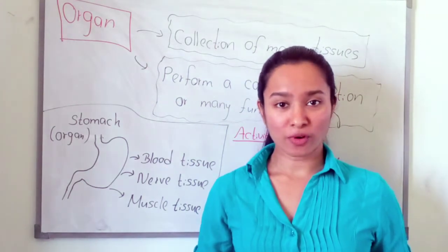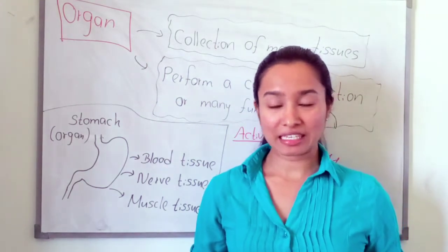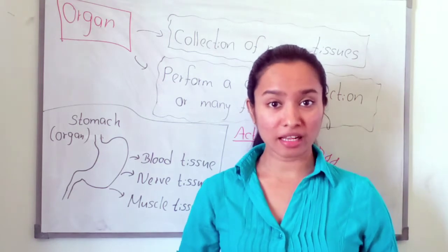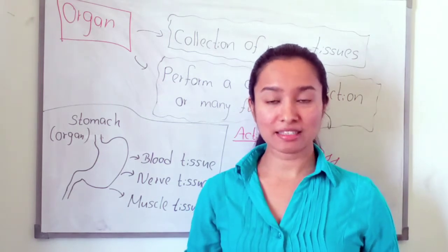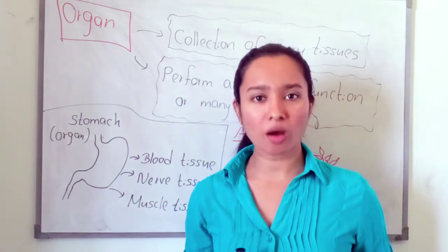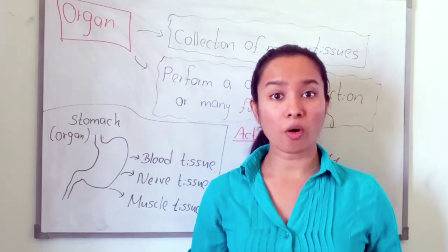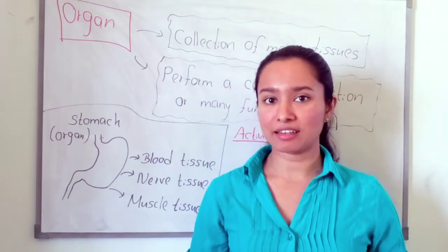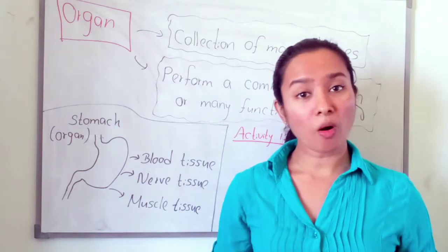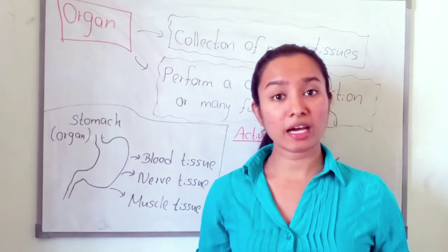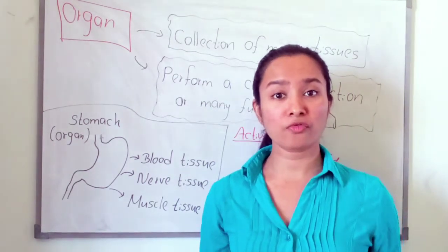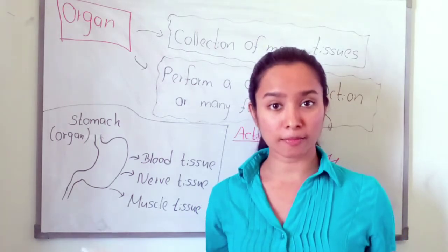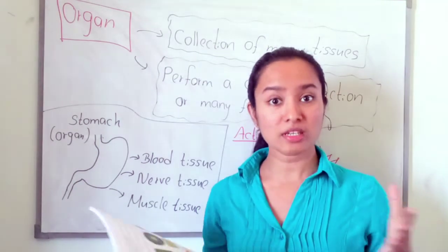The third level of organization is the organ. In Sinhala, we call it Abayabaya. The organ is made up of a collection of different types of tissues together.